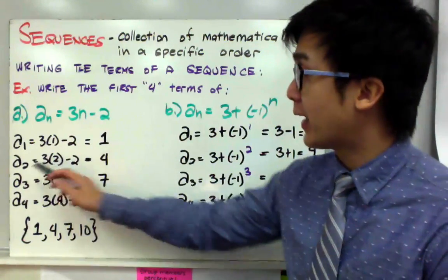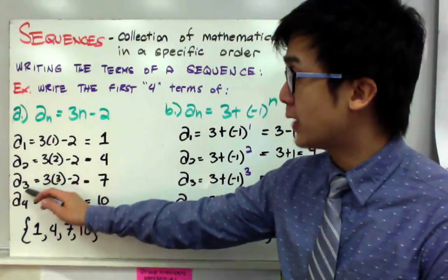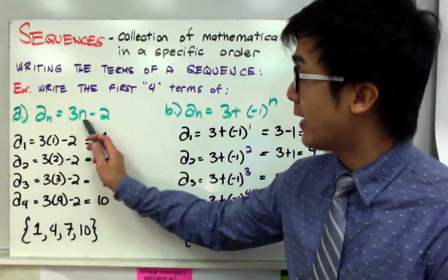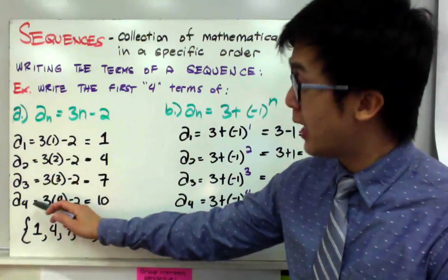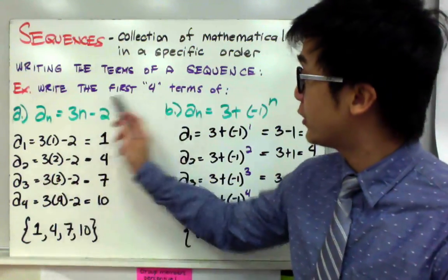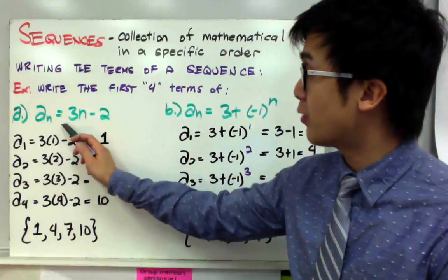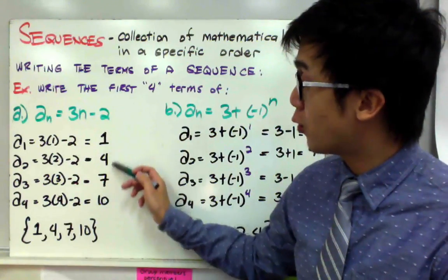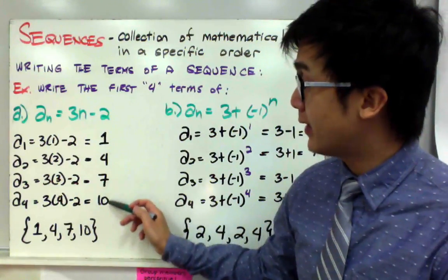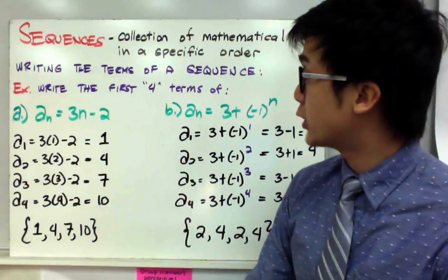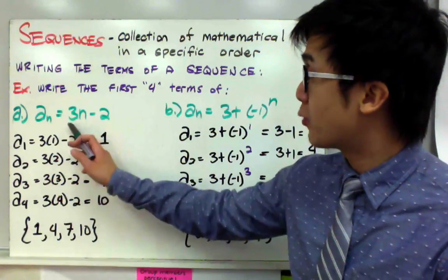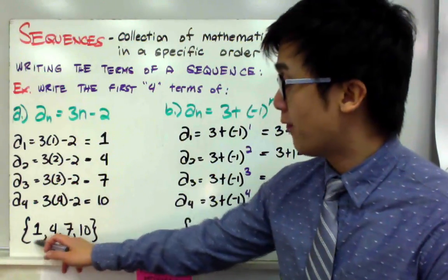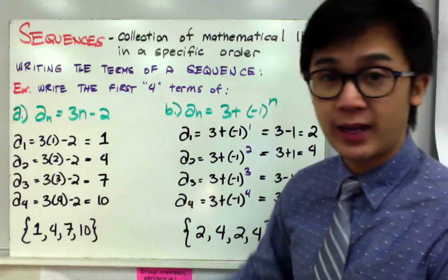Replacing n by 1 gives you 3 times 1 minus 2, equal to 1. For a sub 2, a sub 3, and a sub 4, just replace n by those corresponding numbers. The first four terms of the sequence 3n minus 2 are 1, 4, 7, and 10.